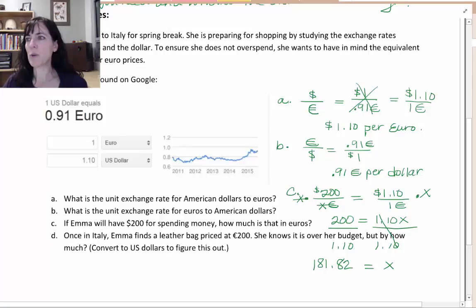Two hundred divided by one point one. And I get one eighty one point eight one eight. So I'm going to change that to a two. And that is in - I'm looking back for what units I have. And part C, the x was euros. So this is in euros. So that is two hundred dollars is one hundred eighty one point eight two euros.